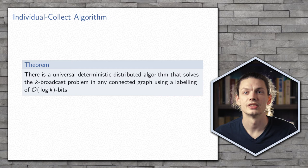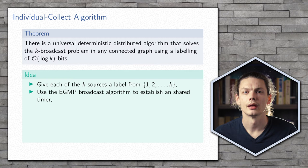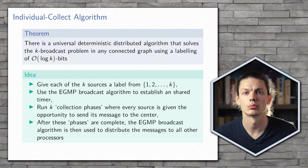The first results we'll look at are our results in general graphs. The first one in particular is the individual collect algorithm, which uses a labeling of length O(log k). We assign a unique label to each of the sources and choose some coordinator to perform the EGMP algorithm to establish a shared timer as well as find those paths. Once these are found, each processor with some message uses that path to transmit its information back to the coordinator, who can then use the EGMP broadcast algorithm to distribute all of these source messages to the rest of the network.